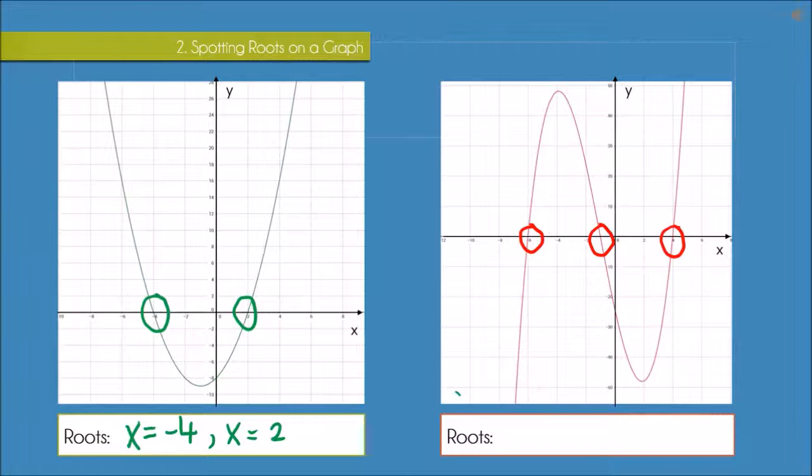And we can write them in the same way as we did with the quadratic. So we have x equals minus 6, the second one here looks like it's at about minus 1 so x equals minus 1, and then the last one is at x equals 4. And that's all we have to do.